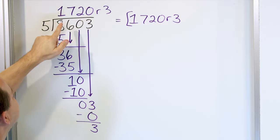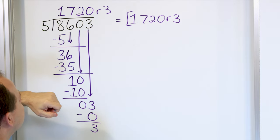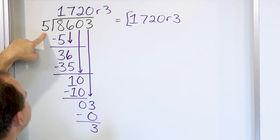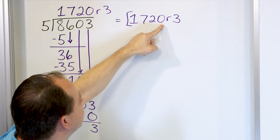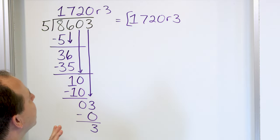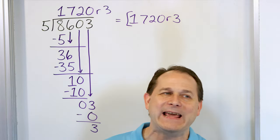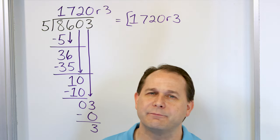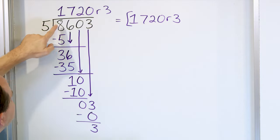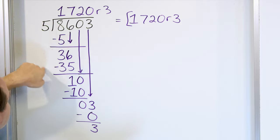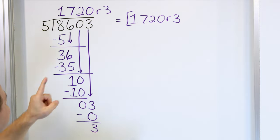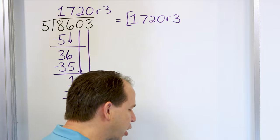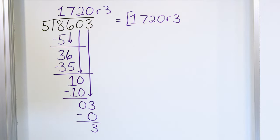So what this means is: if I have 8,603 peanut butter and jelly sandwiches and I'm going to put them on 5 cars to take to 5 different parties, then every one of those cars is going to have 1,720 sandwiches. But I'm going to have 3 sandwiches left that I can't distribute among 5 cars, so we just call it a remainder. Because we can divide into the first digit, we have one extra cycle through the process, and the answer is 4 digits plus a remainder.